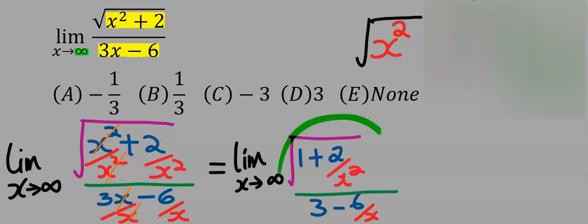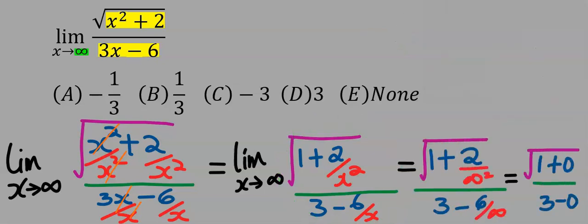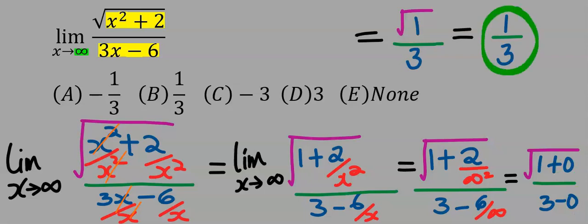Next we take the limit of the remaining function. Now you input infinity in the places of x and any number that divides infinity is zero. Square root of one is one and our answer is one over three which is b.